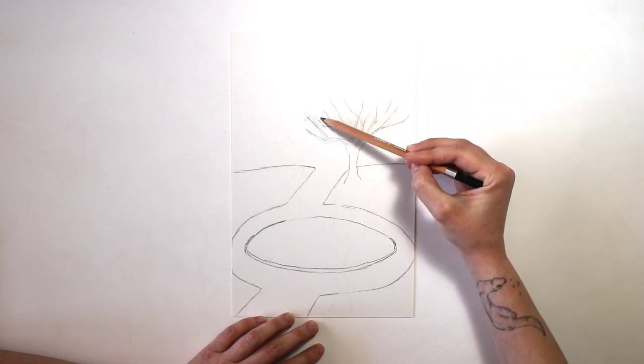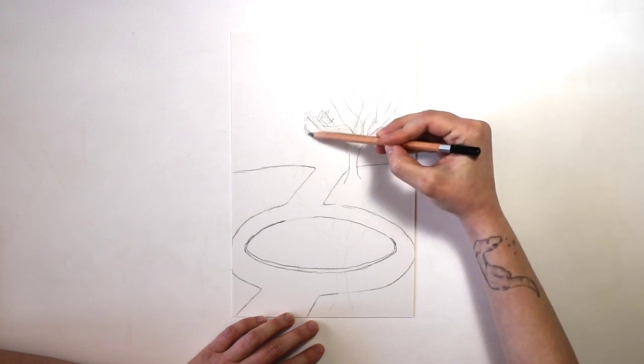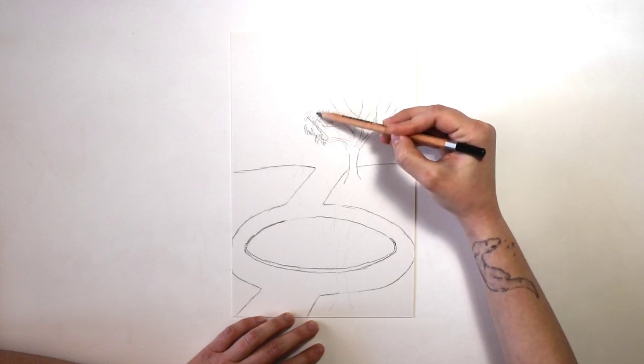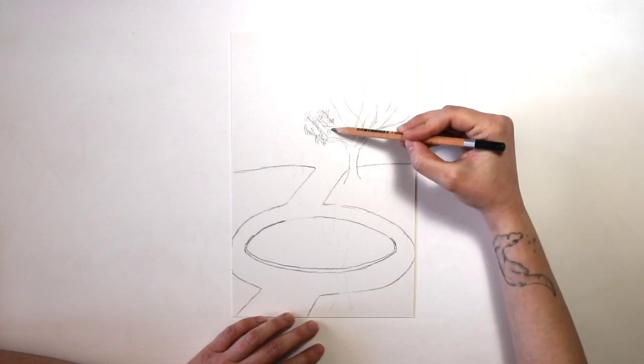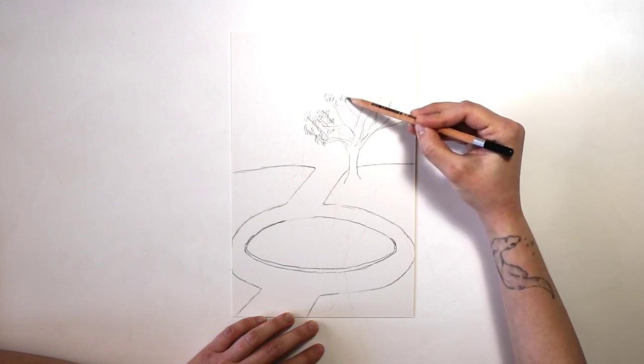You can get more detailed once you've sketched your main branches and start to have skinnier ones growing out of them. I've started to use some short curved lines to show where the leaves would be growing on my tree. I'm not going to focus on drawing every leaf, otherwise we'd be here all day.